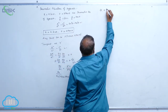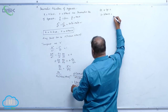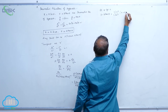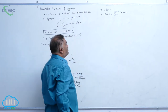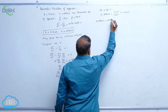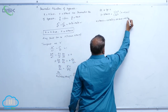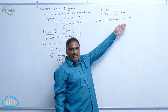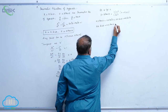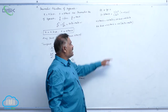The equation of the tangent is y minus b tan theta equals (b secant theta divided by a tan theta) times (x minus a secant theta). After cross multiplication: a y tan theta minus a b tan squared theta equals b x secant theta minus a b secant squared theta. Rearranging, b x secant theta minus a y tan theta equals a b times (secant squared theta minus tan squared theta), which equals a b by the trigonometric identity.